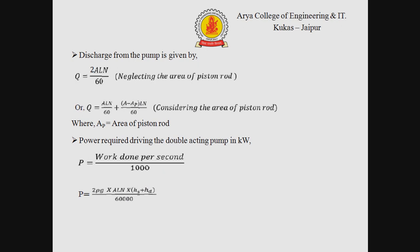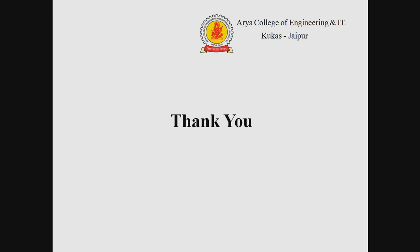The discharge from a double acting pump is given by Q = 2ALN / 60 when neglecting the area of the piston rod. If we consider the piston rod area, then Q = ALN / 60 + (A - AP) × LN / 60, where AP is the area of the piston rod. The power required to drive the double acting pump in kW = 2ρgALN(HS + HD) / 60,000.